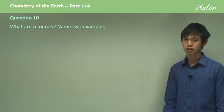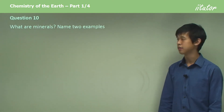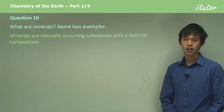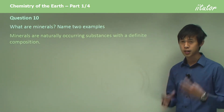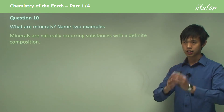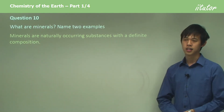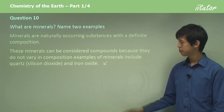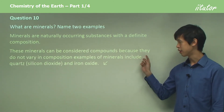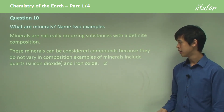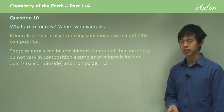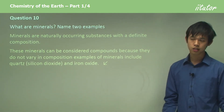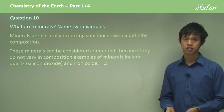What are minerals? Minerals are naturally occurring substances with a definite composition. A mineral has a defined composition — for example, bauxite is mostly aluminum oxide. These minerals can be considered compounds because they do not vary in composition. Examples of minerals include quartz, which is silicon dioxide, and iron oxide. These minerals are just compounds that we find in the Earth's crust.